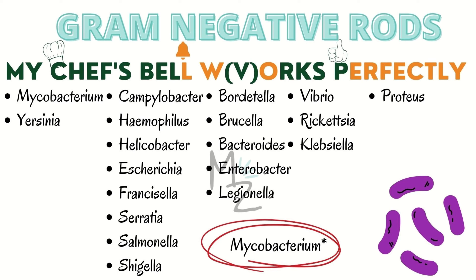Continuing the mnemonic 'My Chef's Bell Works Perfectly': E is for Enterobacter. L is for Legionella. W is for Vibrio — W and V sometimes sound the same, so 'we' is in brackets for Vibrio. R is for Rickettsia. KS is for Klebsiella. And P is for Proteus. So 'My Chef's Bell Works Perfectly' covers all our gram negative rods.